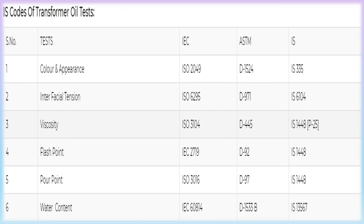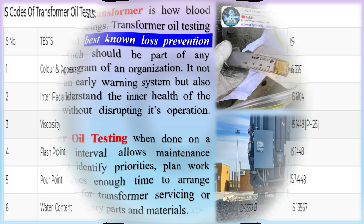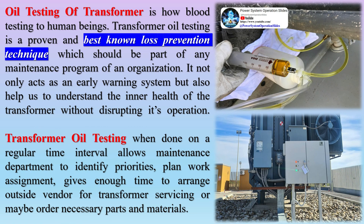Oil testing of a transformer is like blood testing for human beings. Transformer oil testing is a proven and best-known loss prevention technique which should be part of any maintenance program. It not only acts as an early warning system but also helps us understand the inner health of the transformer without disrupting its operation.